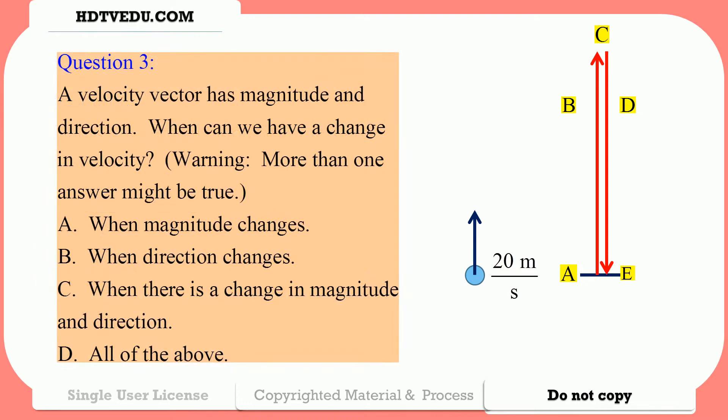Question number 3: A velocity vector has magnitude and direction. When can we have a change in velocity? Warning — more than one answer might be true. A: when magnitude changes. B: when direction changes. C: when there is a change in magnitude and direction. D: all of the above.